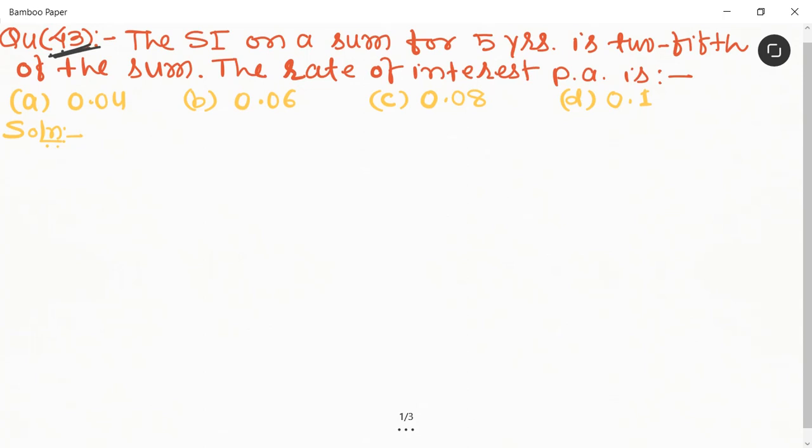So first, we let the sum be rupees 100. According to the question, simple interest is two-fifth of sum, so 2/5 of 100 equals 40, and time is given as five years.